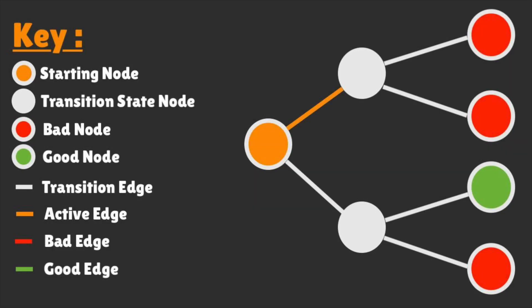Graph theory works like the following. Let's take a look at this decision tree. Assuming that we always choose the top path, we end up with a depth-first search similar to what's shown on screen. Simple, right?